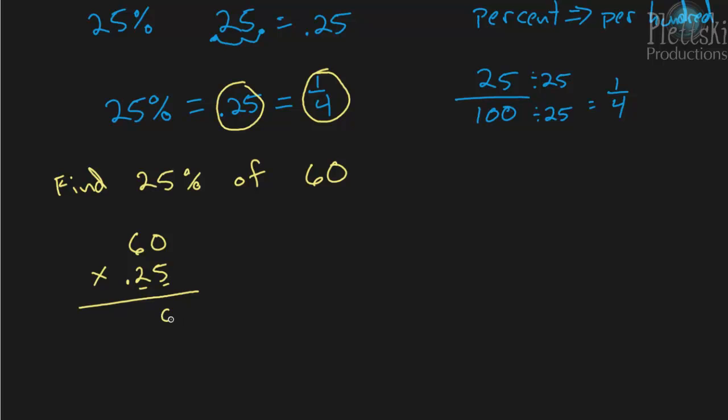5 times 0 is 0. 5 times 6 is 30. And then we bring down a 0. And 2 times 0 is 0. And 2 times 6 is 12. Now we add 300 and 1,200, and we'll get 1,500.